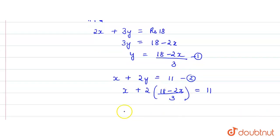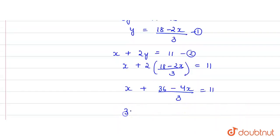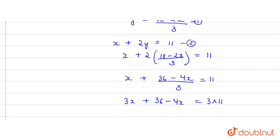Opening the brackets: x + 2(18 - 2x)/3 = 11. Multiplying by 3: 3x + 36 - 4x = 33.